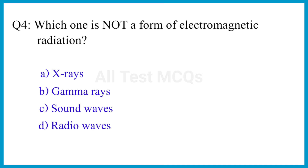Question number 4. Which one is not a form of electromagnetic radiation? The correct answer is option C. Sound waves.